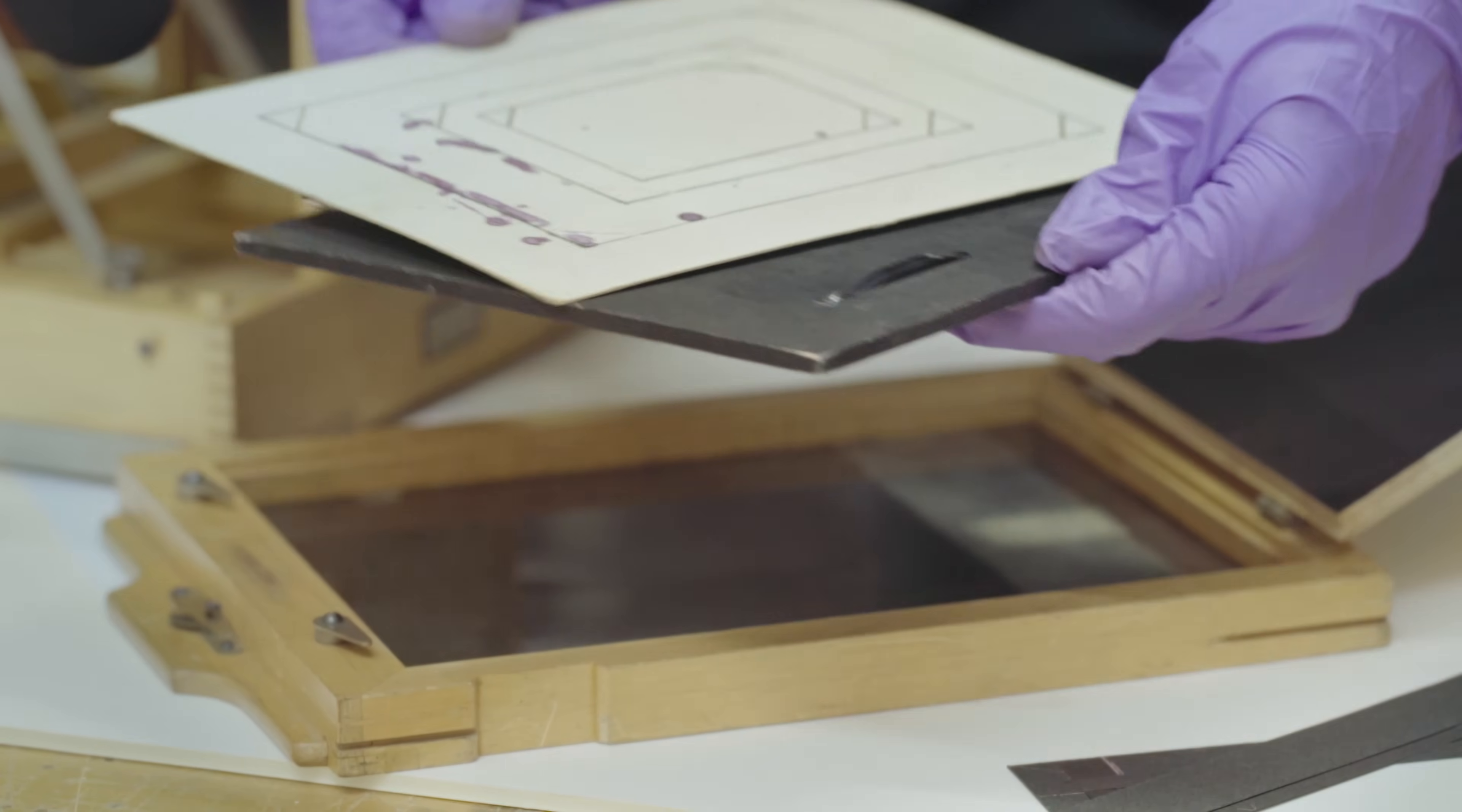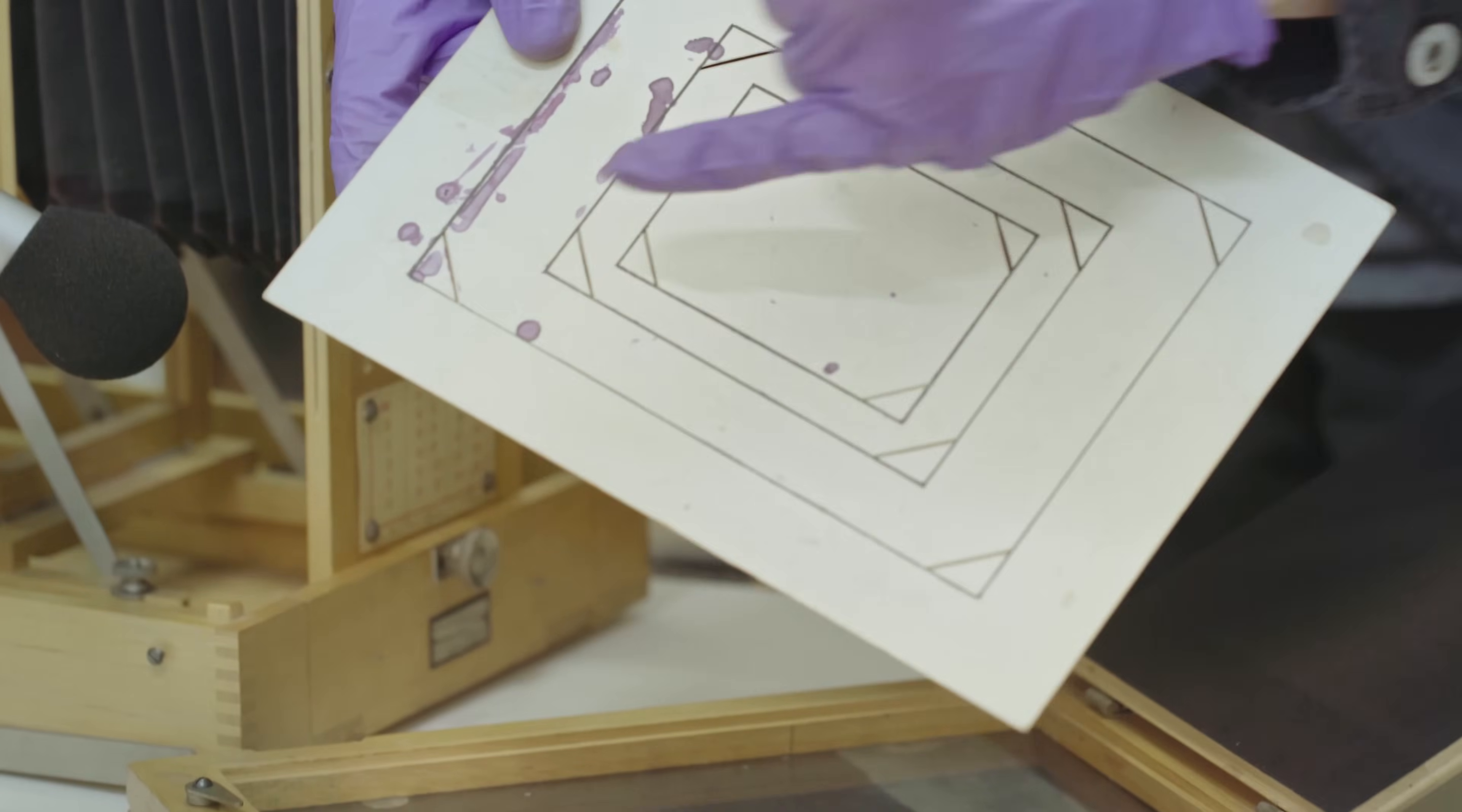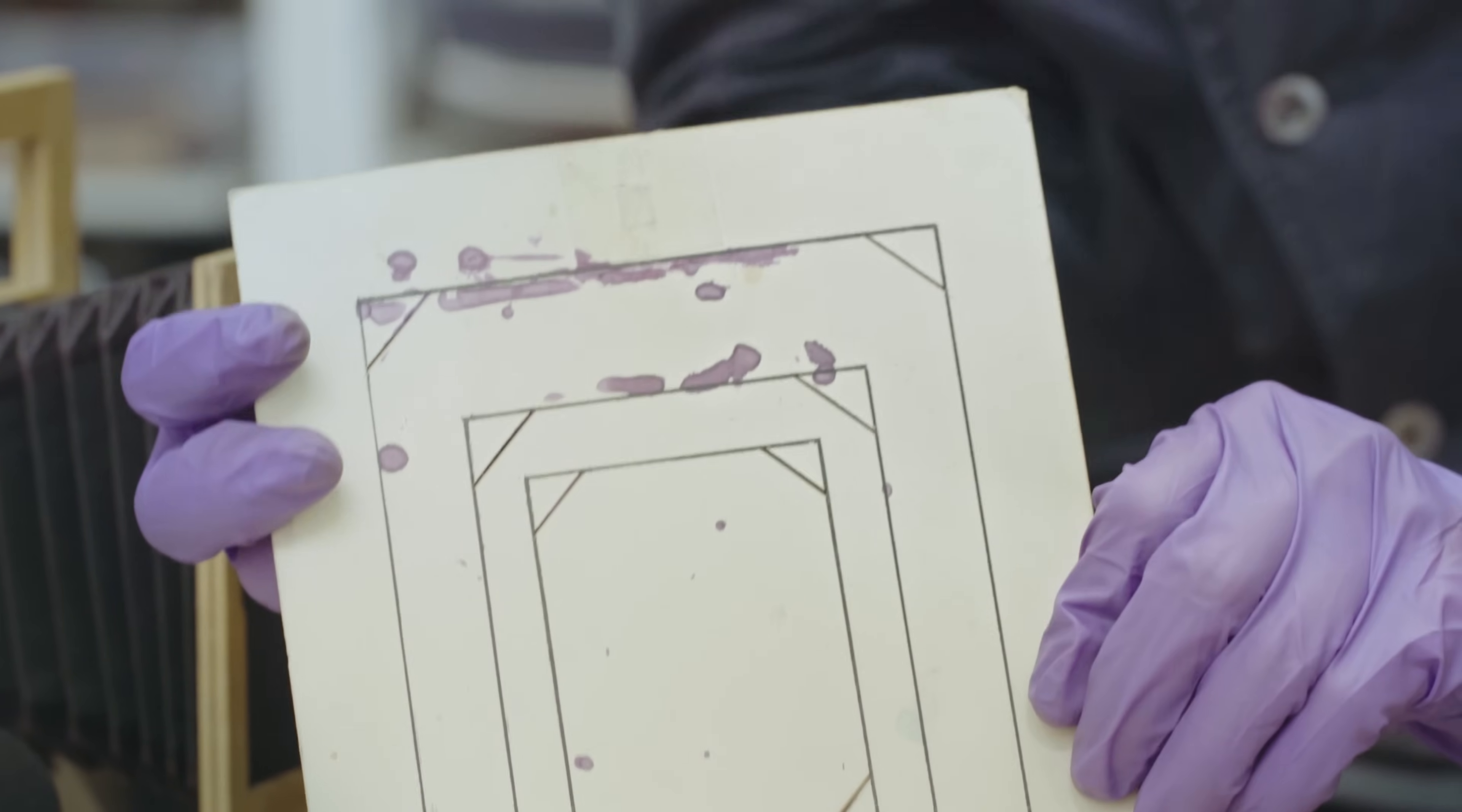It's also got this really lovely piece of card that would have been used to hold the paper exactly in place as the exposure was being made. As you can see, the cutouts here would have allowed the corners of the paper to slip in and keep it securely in place.